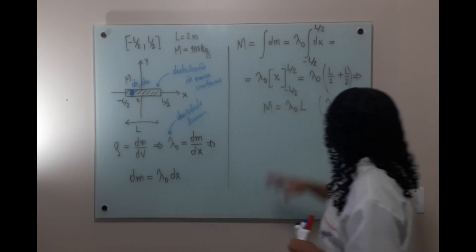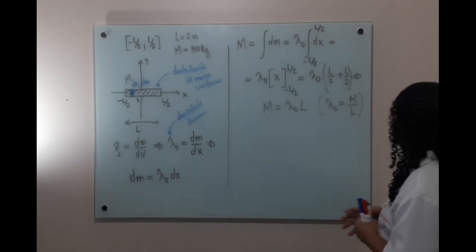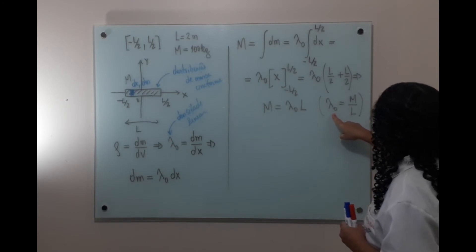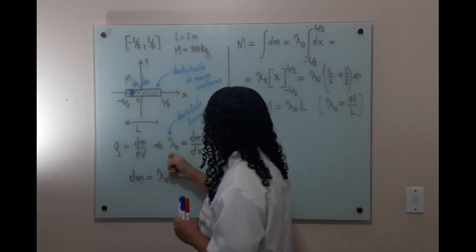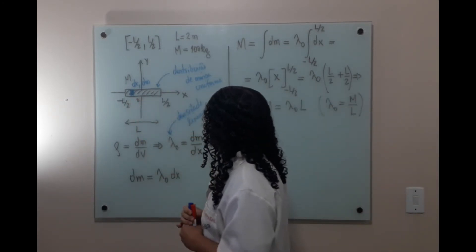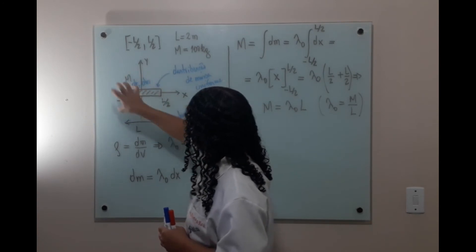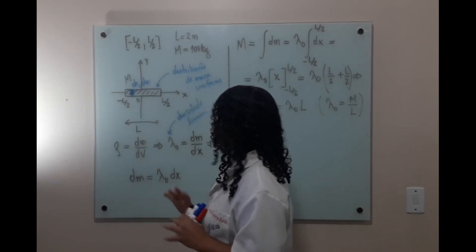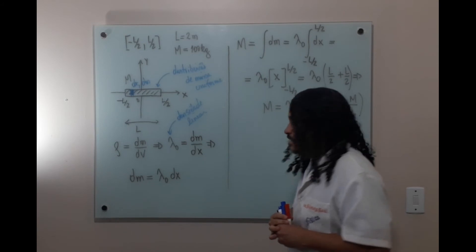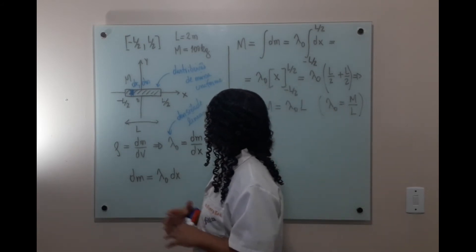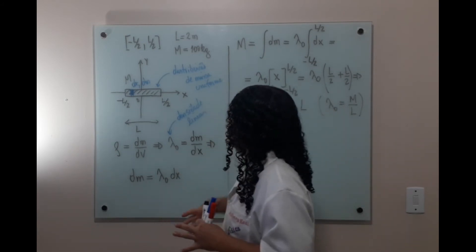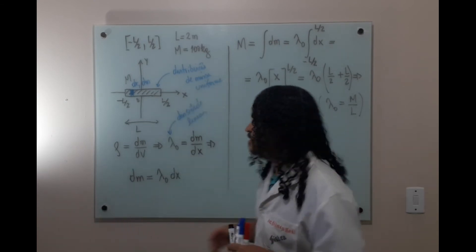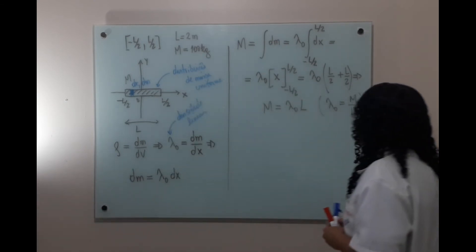Essa conta nos diz que para calcular a densidade linear, basta pegar a massa total e dividir pelo comprimento total L. A gente tem a densidade linear constante. Isso acontece porque a distribuição de massa é uniforme.